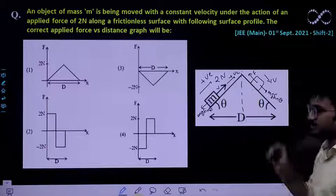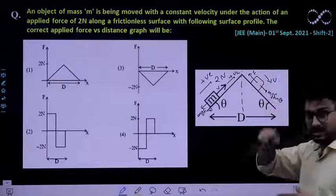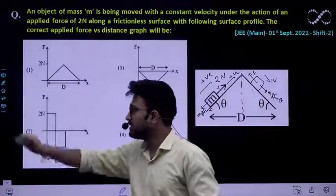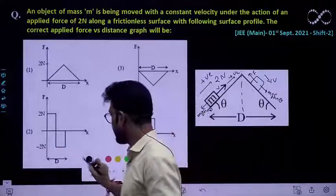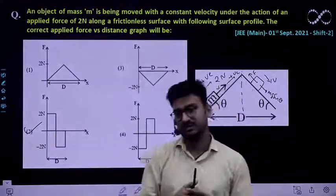So for rest half of the portion this force which has to be acting on the object and it has to be negative. So and it is also constant. So the second is the only option that we are getting and second would be the correct option. I hope this question is clear to everyone. Thank you.